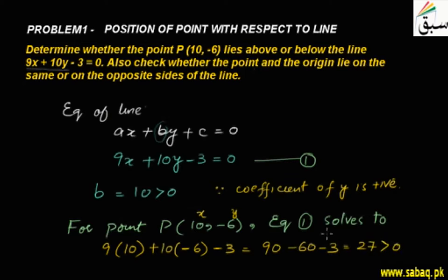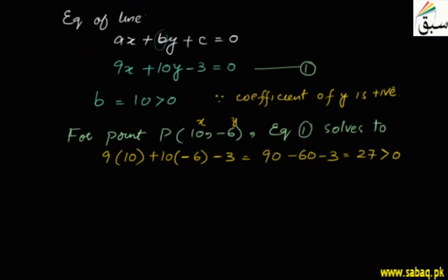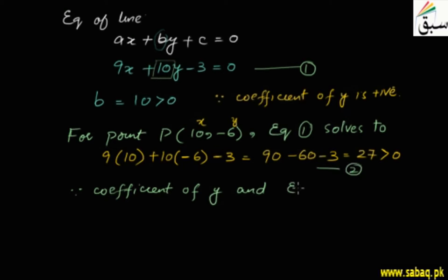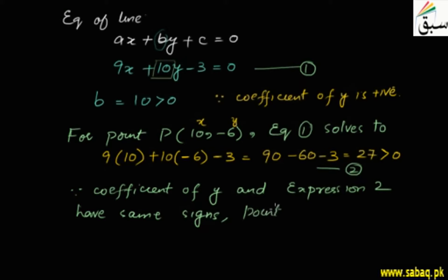The result is positive. Since the coefficient of y (B) is positive and the expression evaluated at P is also positive, they have the same sign. Therefore, point P lies above the line. If the signs were opposite, the point would lie below the line.